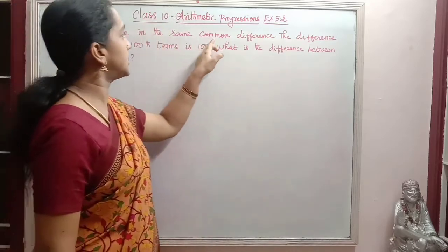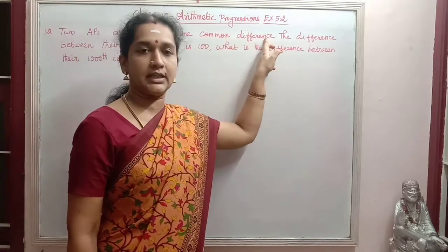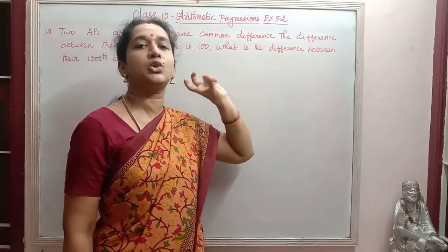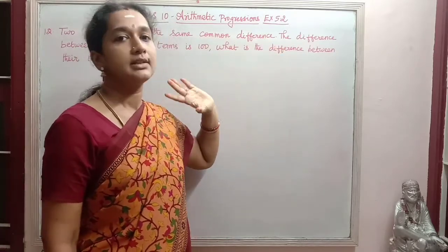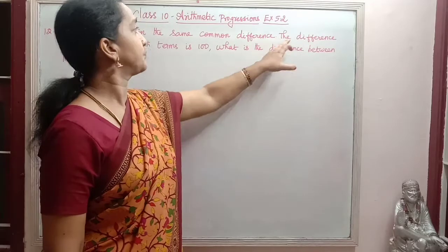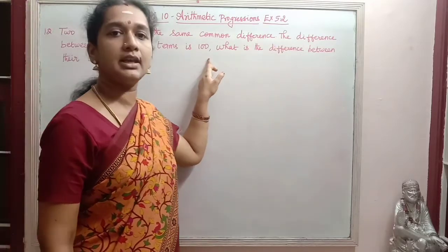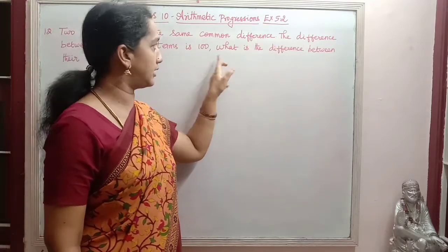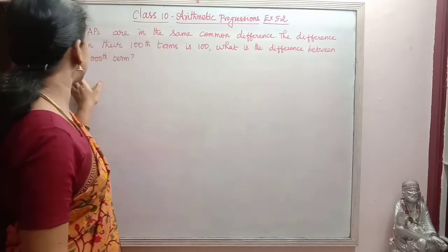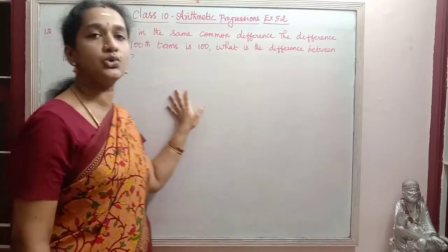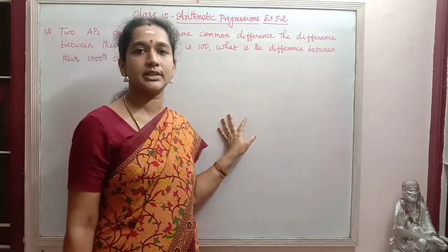Two APs have the same common difference. The difference between the two sequences of the AP is the same. The difference between their 100th terms is 100. What is the difference between their 1000th term? This is the question given.